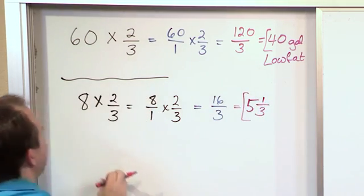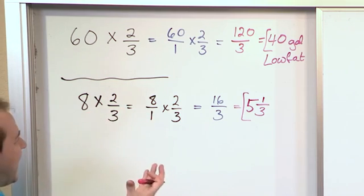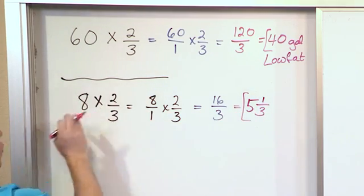So that means that if I have an eight-ounce glass of water, and I drink two-thirds of it, two-thirds is more than half, so it makes sense that I drank about five and a third ounces because that's more than half.